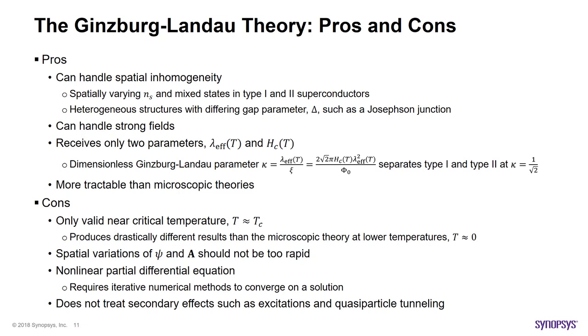However, the rigorous derivation of the theory from the microscopic theories shows that the theory is only valid in temperatures near the critical temperature, and produces wrong results near zero Kelvin. The nonlinear nature of the differential equation necessitates use of iteration in arriving at a solution, which means more computation. Moreover, the same nonlinearity means achieving numerical convergence might not always be so easy. From a physics standpoint, because the theory describes a superconductor with a single order parameter, it does not account for secondary effects, such as excitations and quasi-particle tunneling.